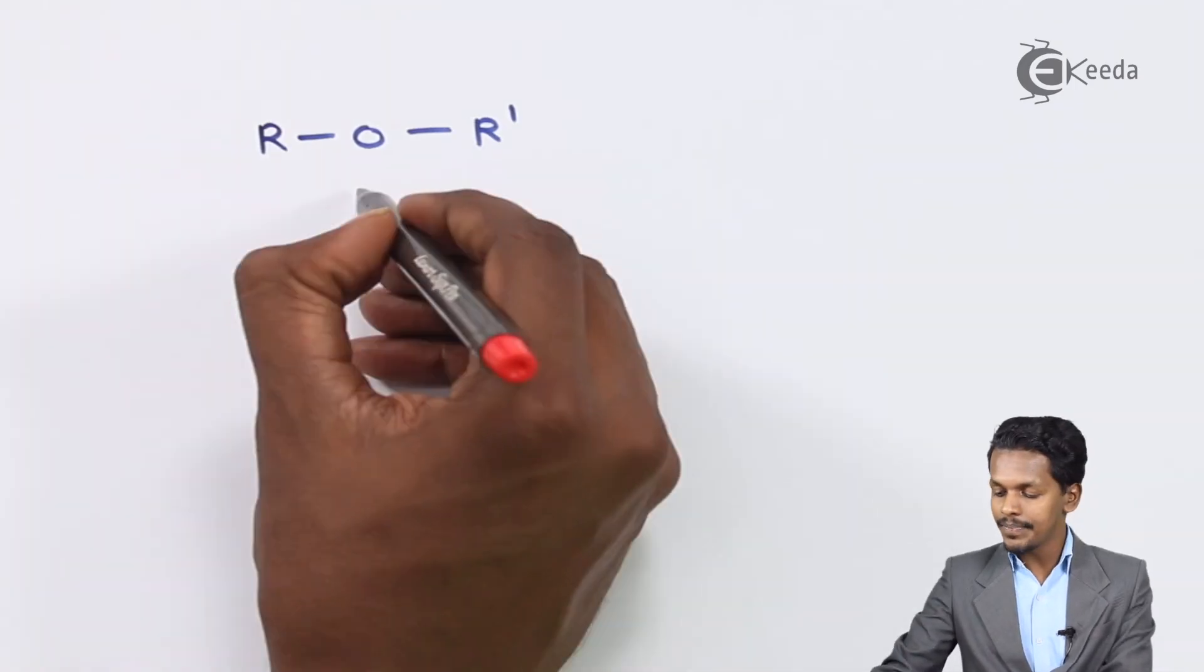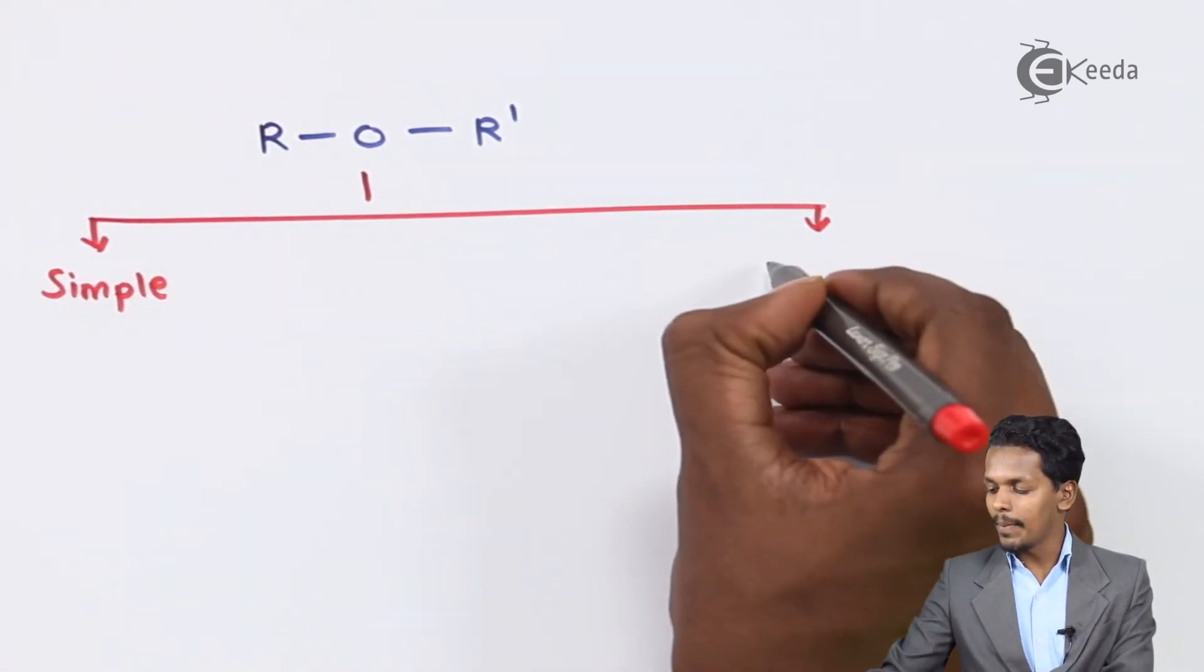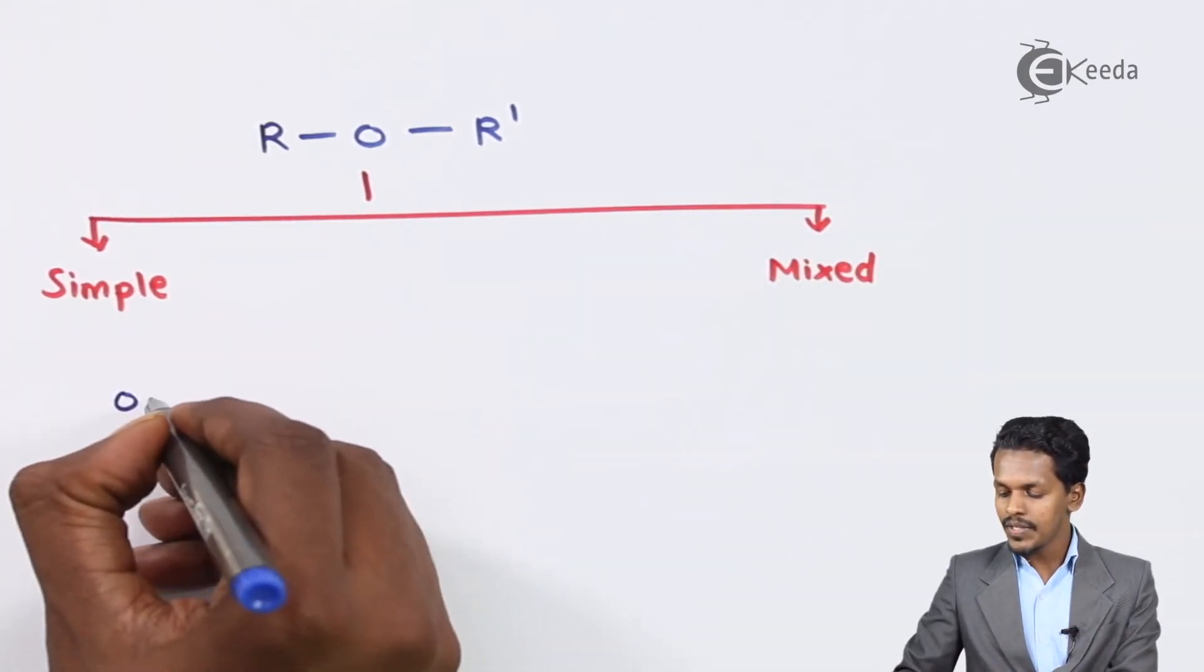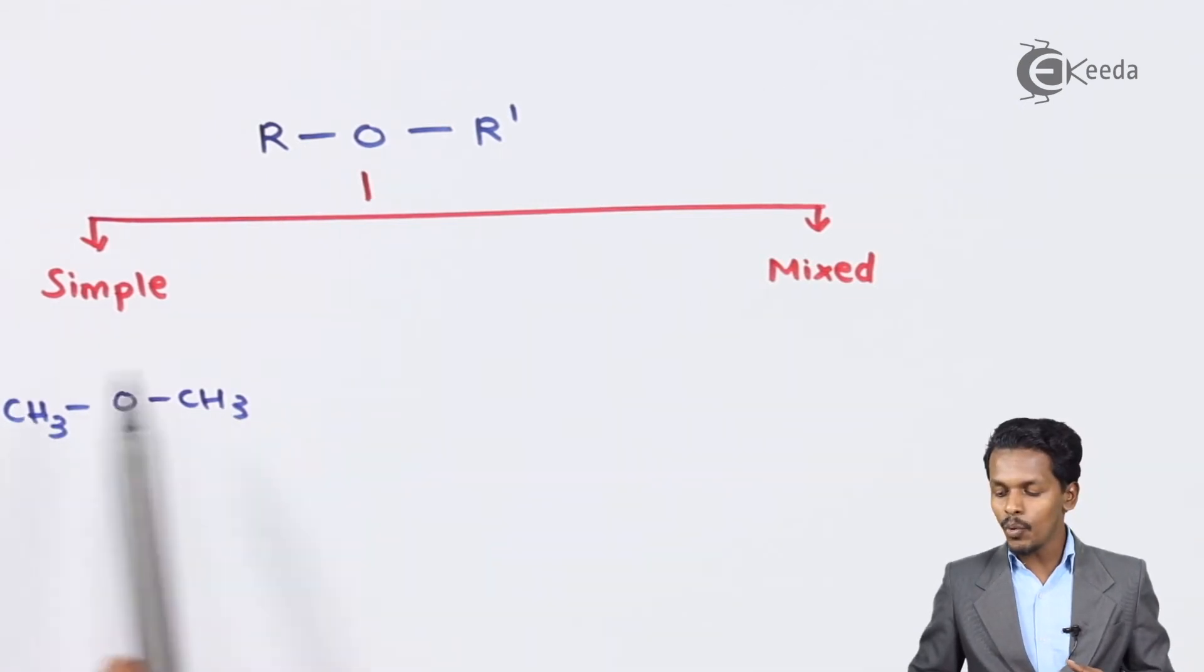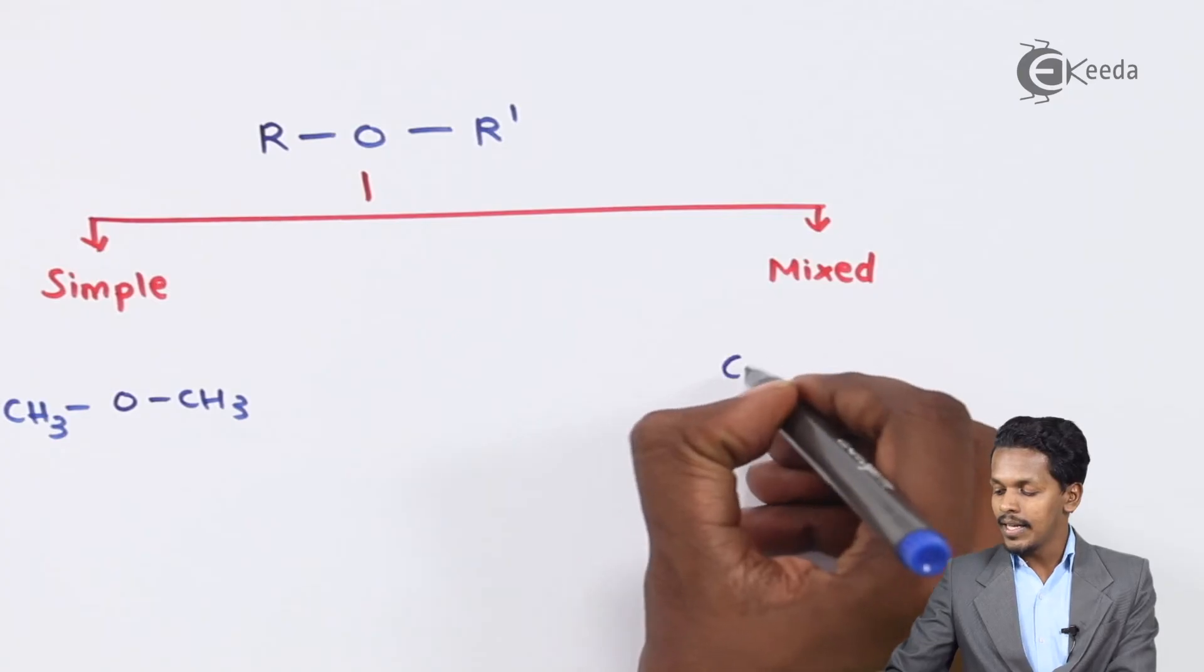Based on that, ethers are classified into two types: simple ether and mixed ether. An example in this case - suppose if I am talking about dimethyl ether. In this case, as you could see, both the alkyl groups are the same, so that's the reason it comes in the classification of simple ether.